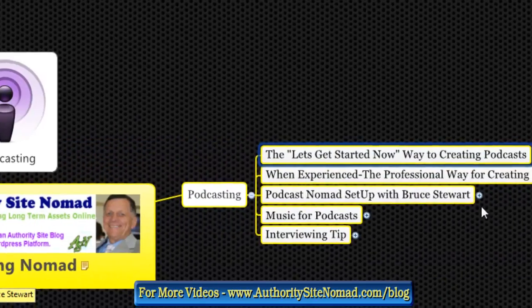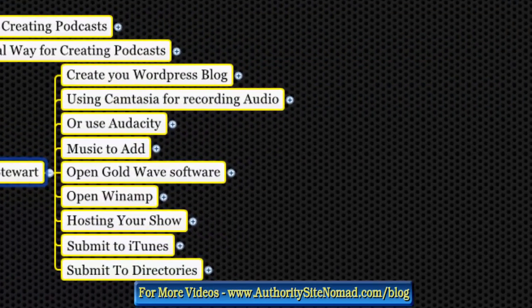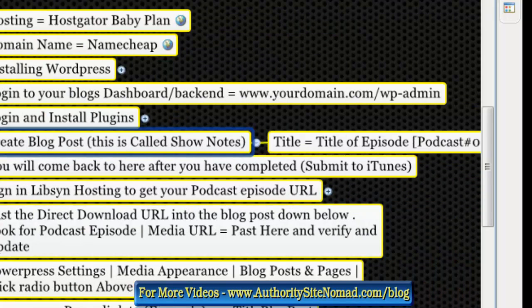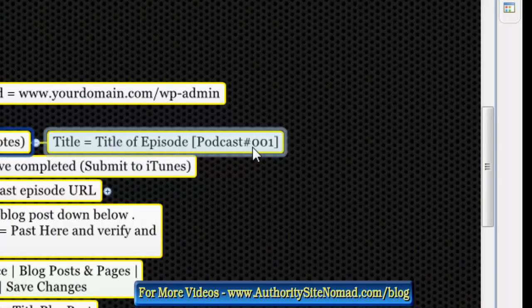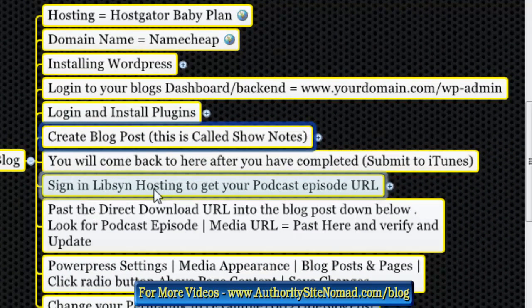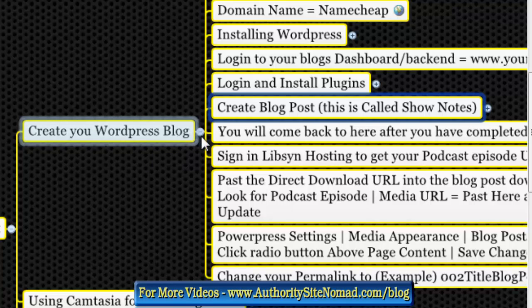Now here's the experienced professional setup - the Podcast Nomad setup with Bruce. Create your WordPress blog with hosting, domain, installing plugins. Create your post because you need the permanent URL, title, and episode number - for example, podcast episode 001. Then submit it to iTunes, sign up for hosting, set your download links, configure your PowerPress plugin settings, and update your permalink for episode 002.